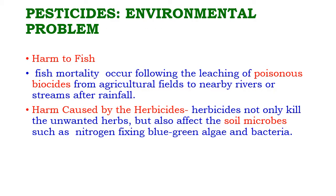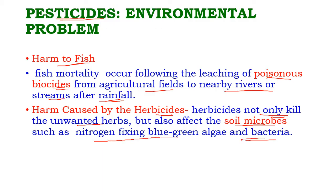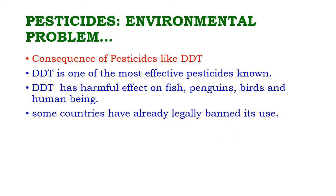Environmental problems caused by pesticides: harm to fish — fish mortality occurs when poisonous biocides leach from agricultural fields into nearby rivers or streams after rainfall. Herbicides not only kill unwanted herbs but also affect soil microbes such as nitrogen-fixing blue-green algae and bacteria. DDT is one of the most effective yet harmful pesticides, causing harm to fish, penguins, birds, and human beings. Some countries have already legally banned its use.